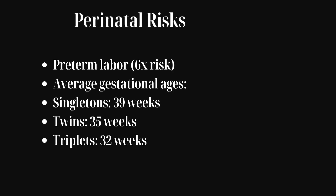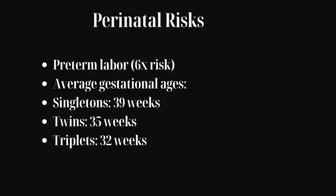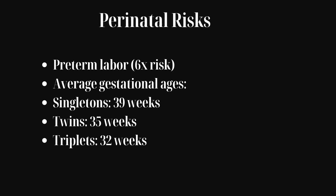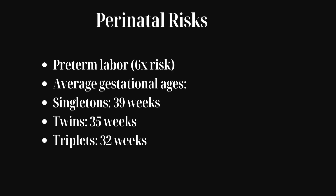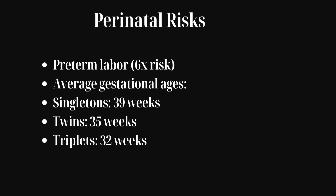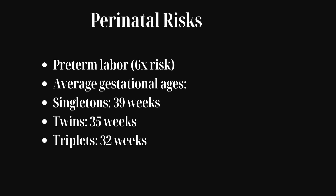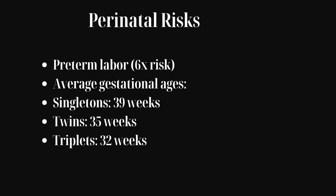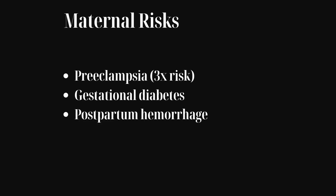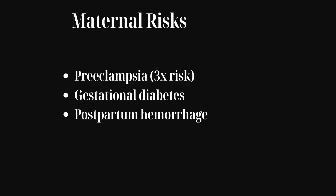One of the most significant challenges in multifetal gestation is the risk of pre-term labor and delivery. On average, singleton pregnancies reach 39 weeks of gestation, whereas twins are typically delivered at 35 weeks, triplets at 32 weeks, and quadruplets at 30 weeks. Pre-term delivery increases the likelihood of neonatal complications such as low birth weight, respiratory issues, and longer hospital stays.